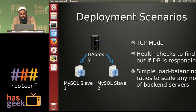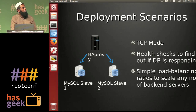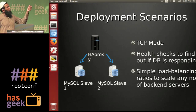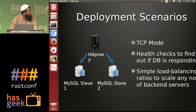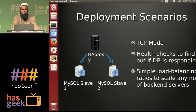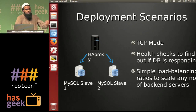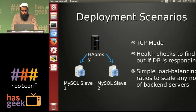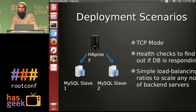HAProxy can also work in TCP mode, which is layer four. You can potentially use any application and do layer four load balancing. For example, you could put multiple MySQL masters and have true write scale instead of doing complicated sharding. You could do simple master-master replication and use HAProxy to load balance it, or have many slave nodes — say 10 slaves — and use TCP mode to distribute traffic across them in whatever ratio you want, with health checks to detect if any slave is not responding.